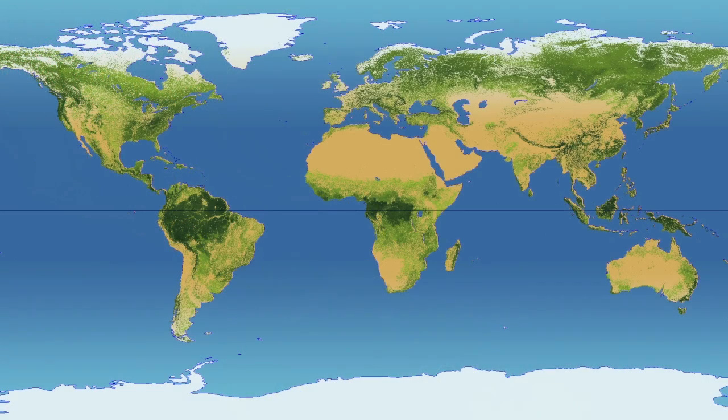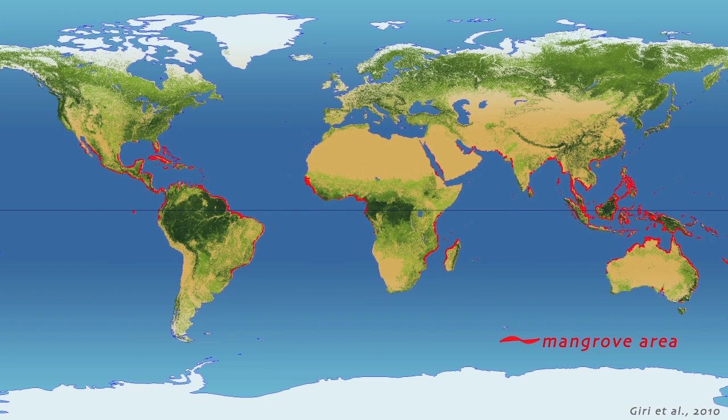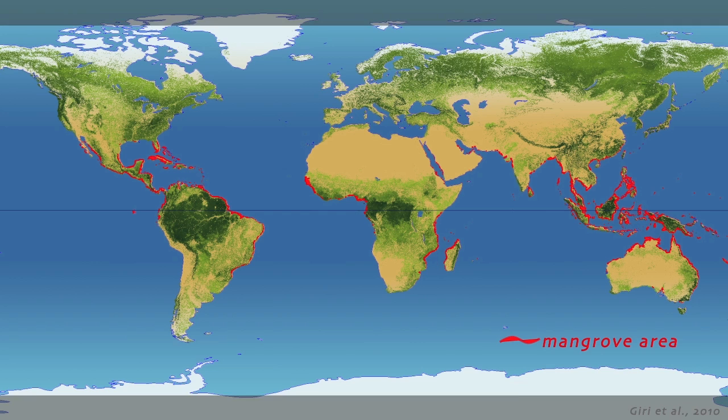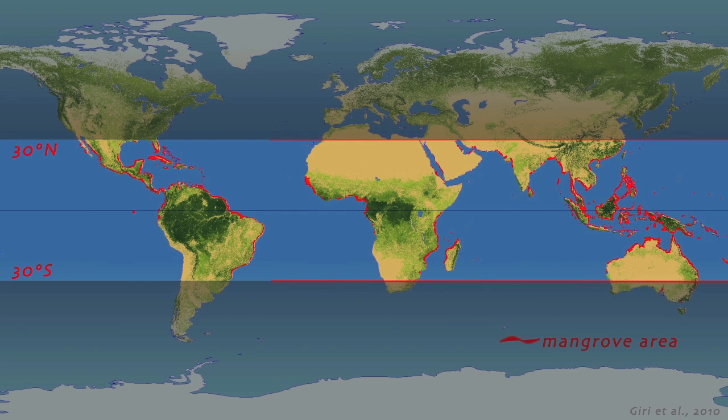Mangrove ecosystems occupy thin strips of land at sea level. Their land area makes up less than 1% of all forests worldwide, but it is their location along tropical and subtropical coastlines which makes them extremely important for us to study and understand.